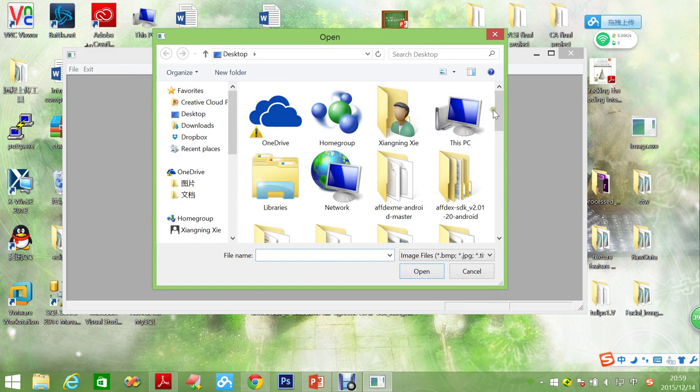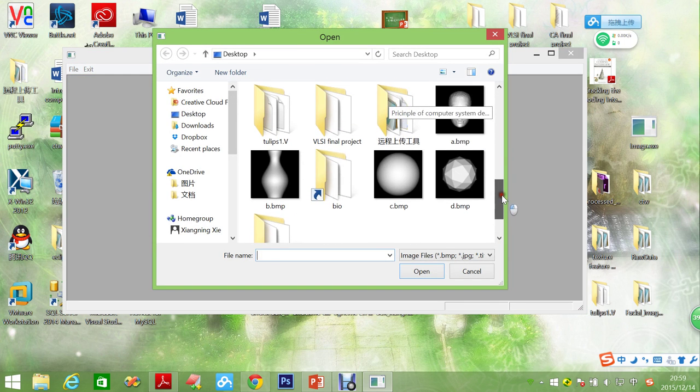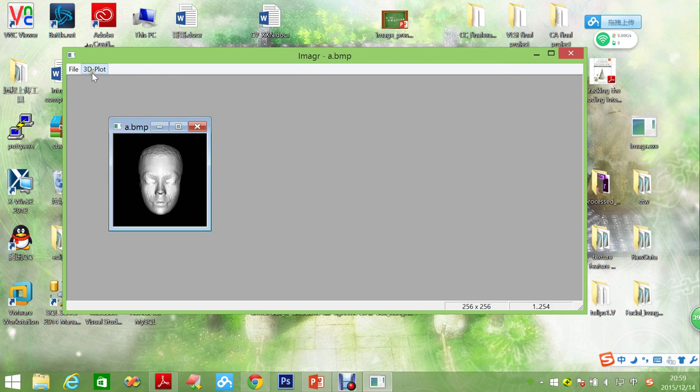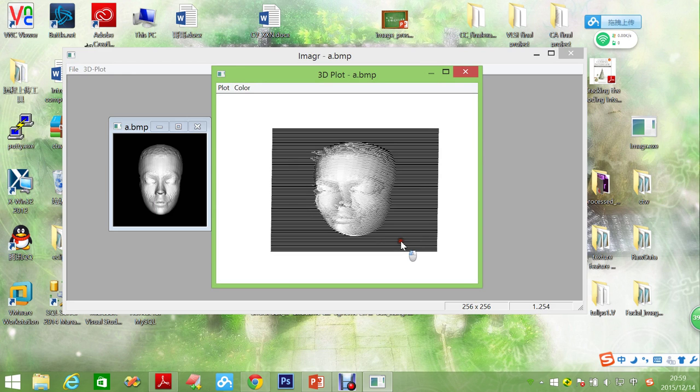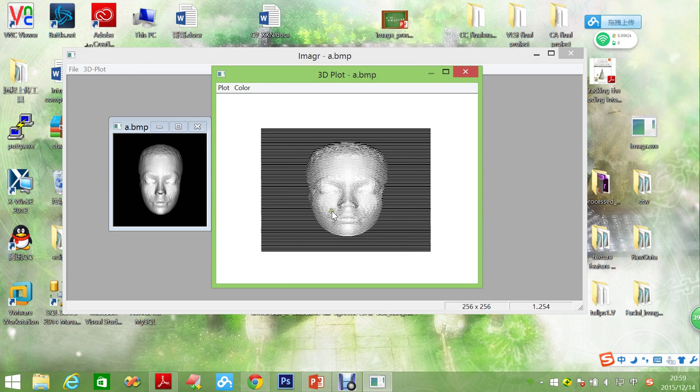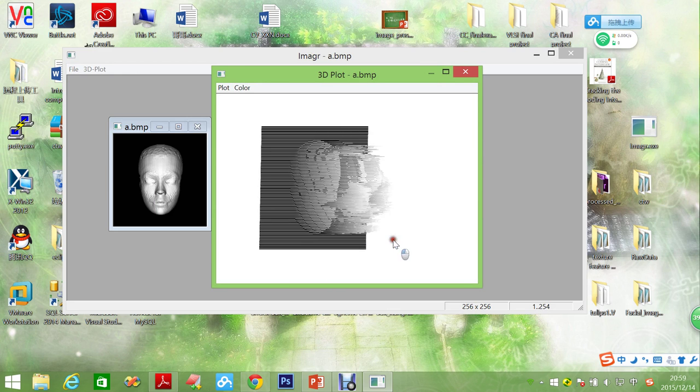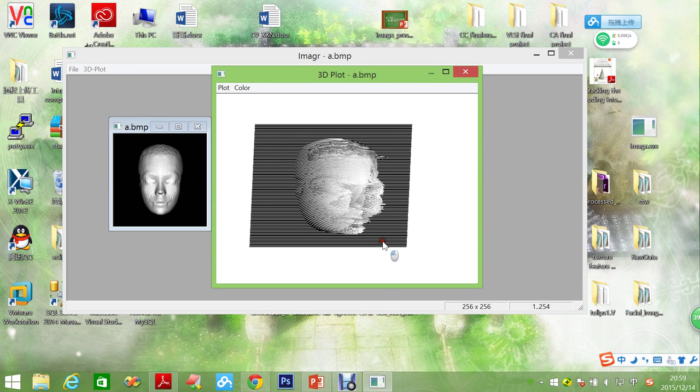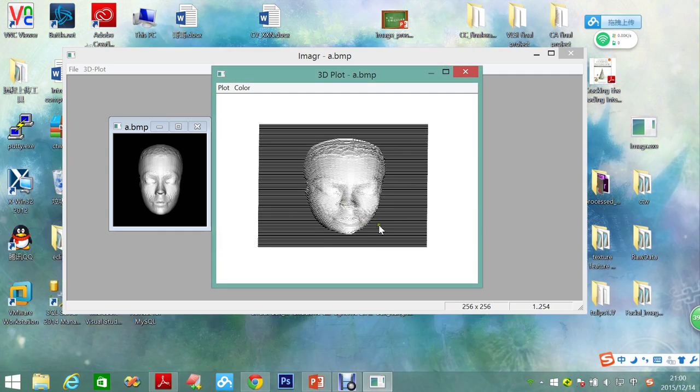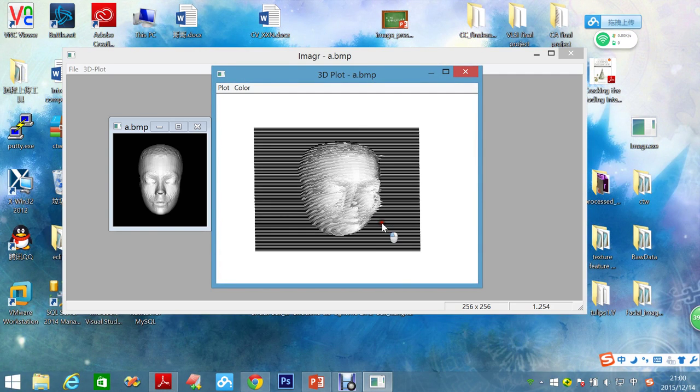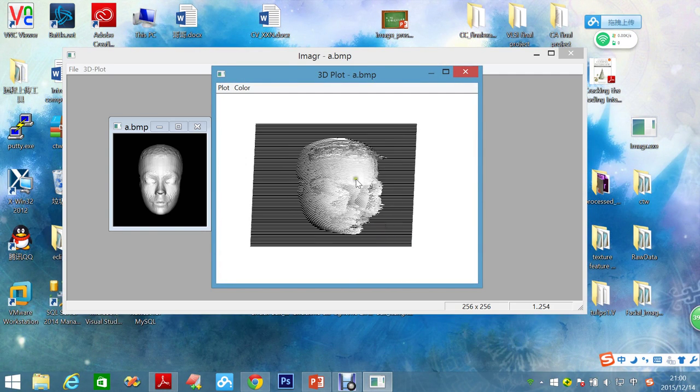And finally, let's try the most complicated one, the human face. Here you can see the contour of the human face. And if you see from this angle, you can see his eyes, his cheeks, and also his nose, which has a fairly good performance.